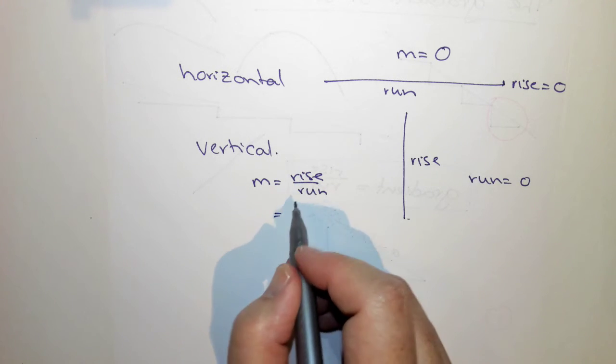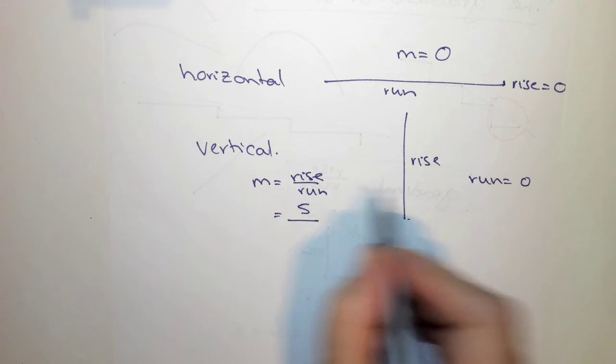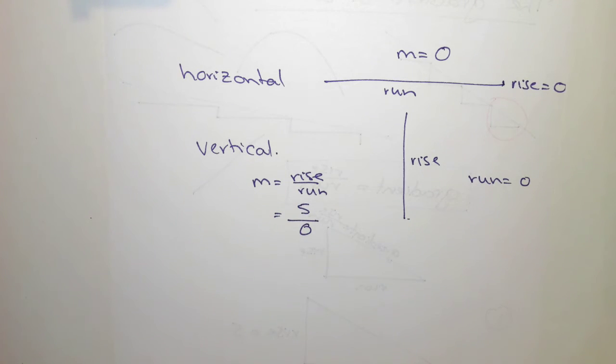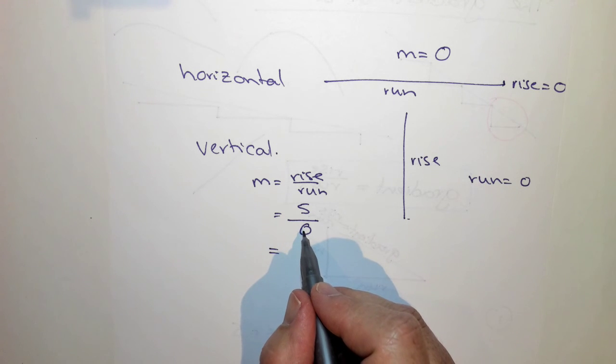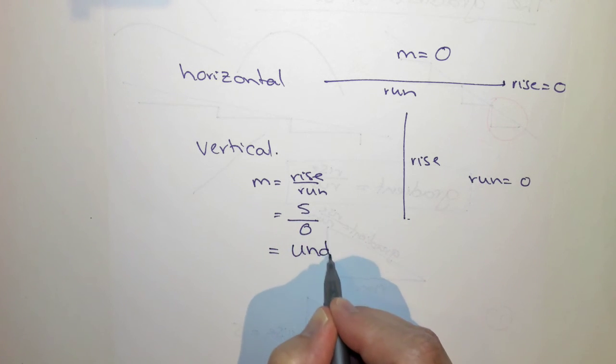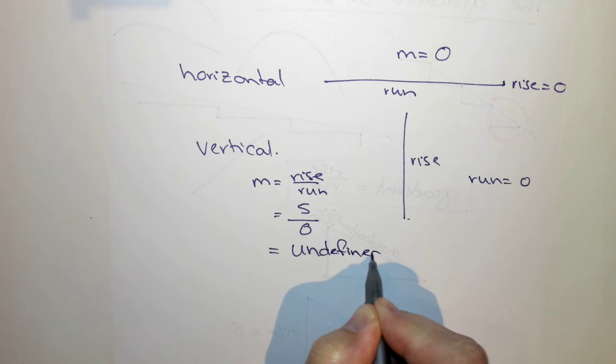Now, if you type that into your calculator, it's going to come back and say MA error. And the reason it says error is because we can't say how many lots of 5 are there in 0. And so what it means is it's undefined. It doesn't exist. It's not a possible answer.